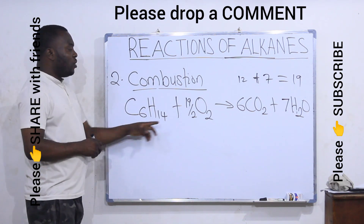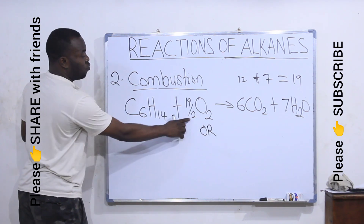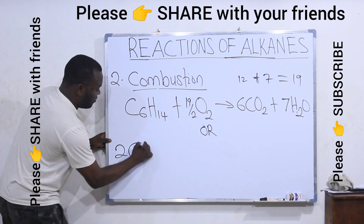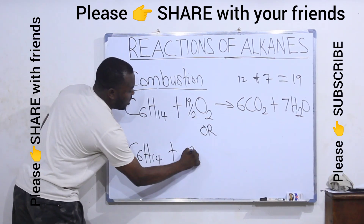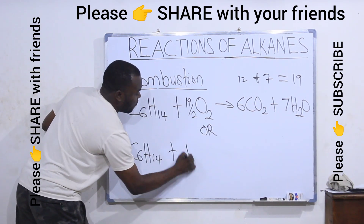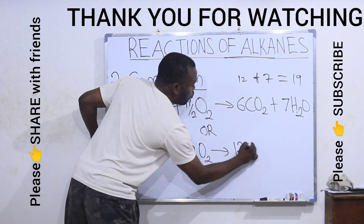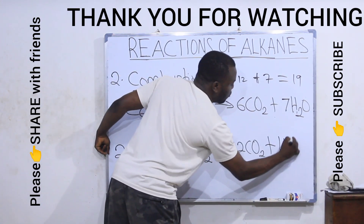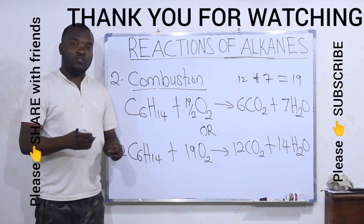If I want to eliminate the fraction, I can multiply everything by two. So I get two C6H14 plus 19 O2 producing 12 CO2 plus 14 H2O. Whether you use the fractional form or this multiplied-through form, both are correct.